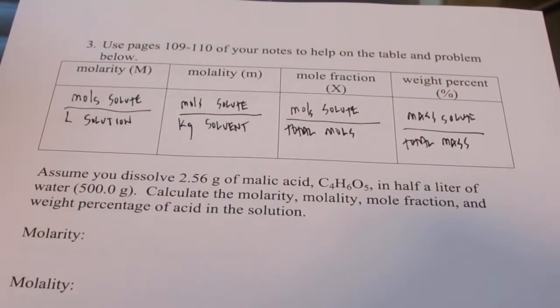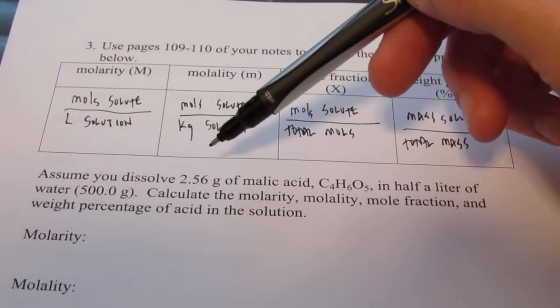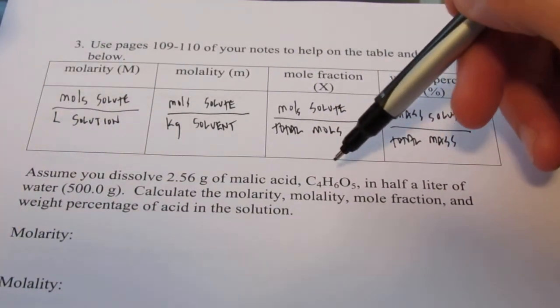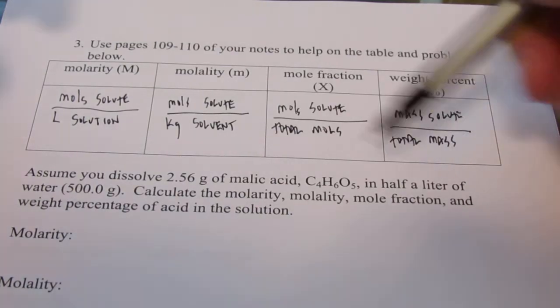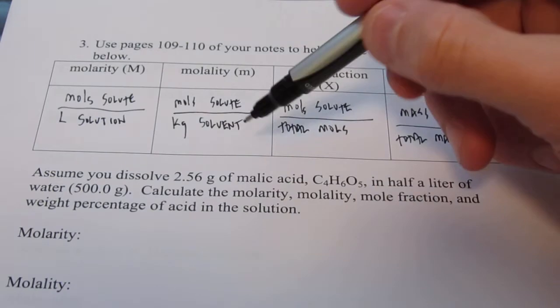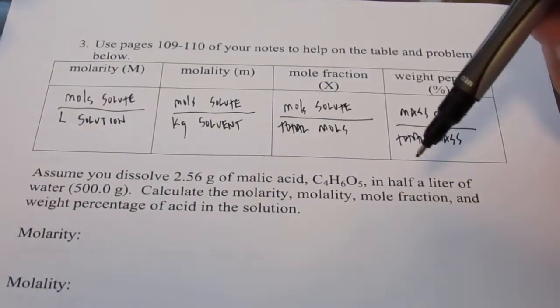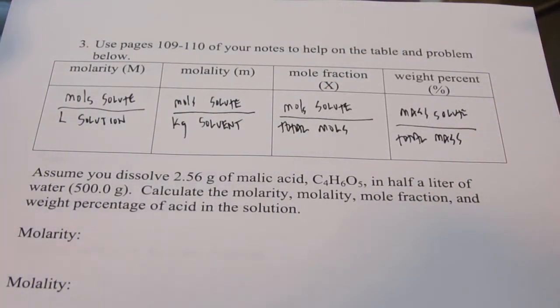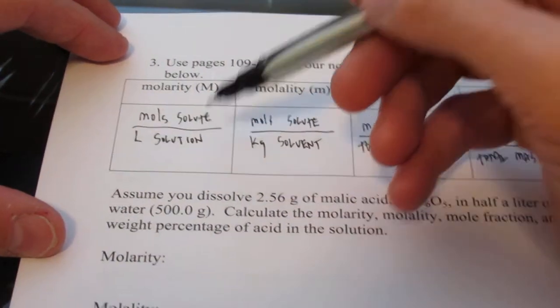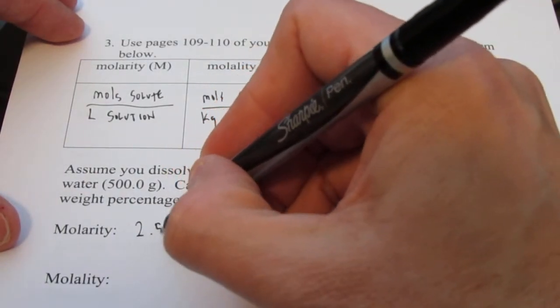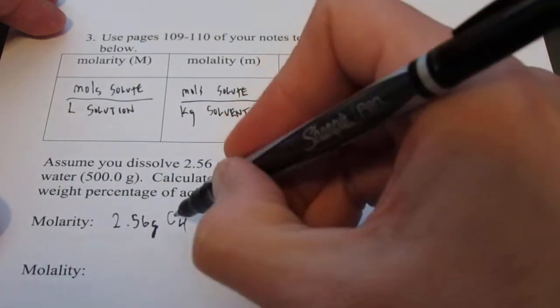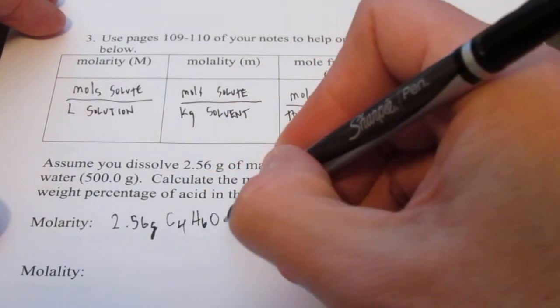So let's practice a few of these. Assume I have, I dissolve 2.56 grams of malic acid and its formula C4H6O5 in half of a liter of water. We'll say 500.0 grams of water. Let's calculate the molarity, the molality, the mole fraction, and the weight percent of the acid in this solution. So let's do molarity first. Remember that's moles of solute divided by liters of solution. So I have 2.56 grams of my malic acid, C4H6O5.